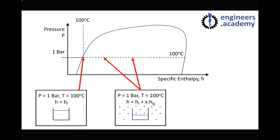With one final example, assume we're 75% of the way from HF to HG. Therefore the dryness fraction x is 0.75, and the enthalpy at this point is HF plus 0.75 — or three quarters — of the enthalpy between HF and HG. It's a way of finding our distance to this point on the x-axis.